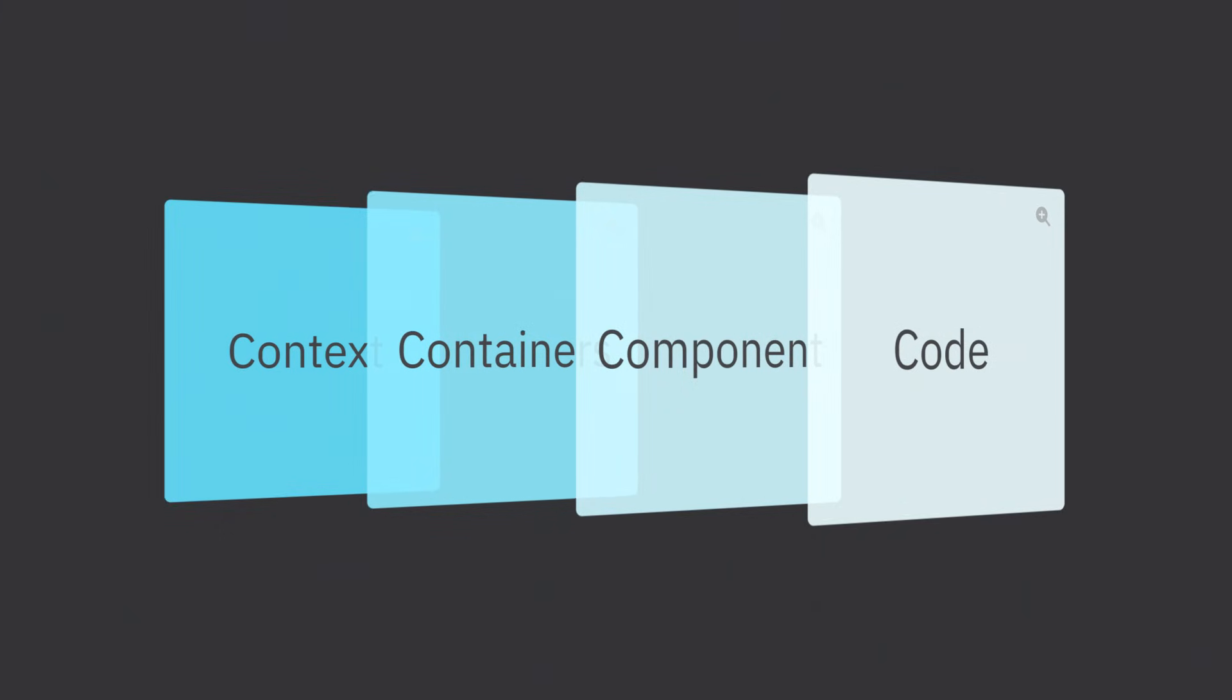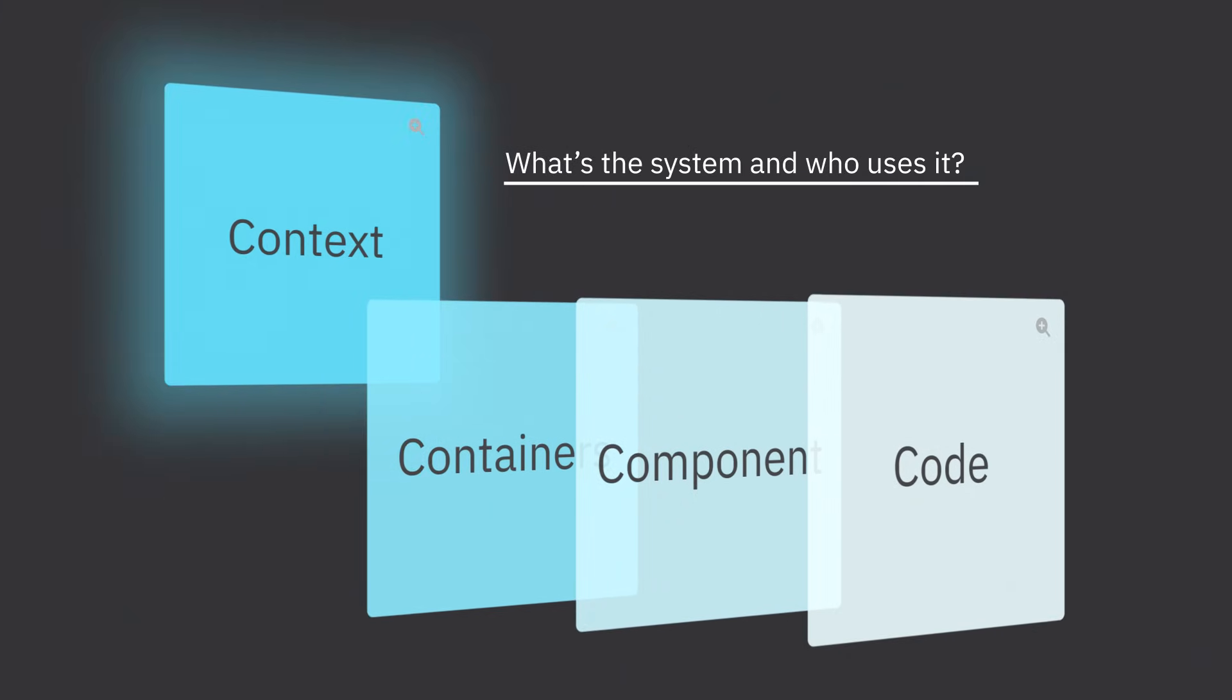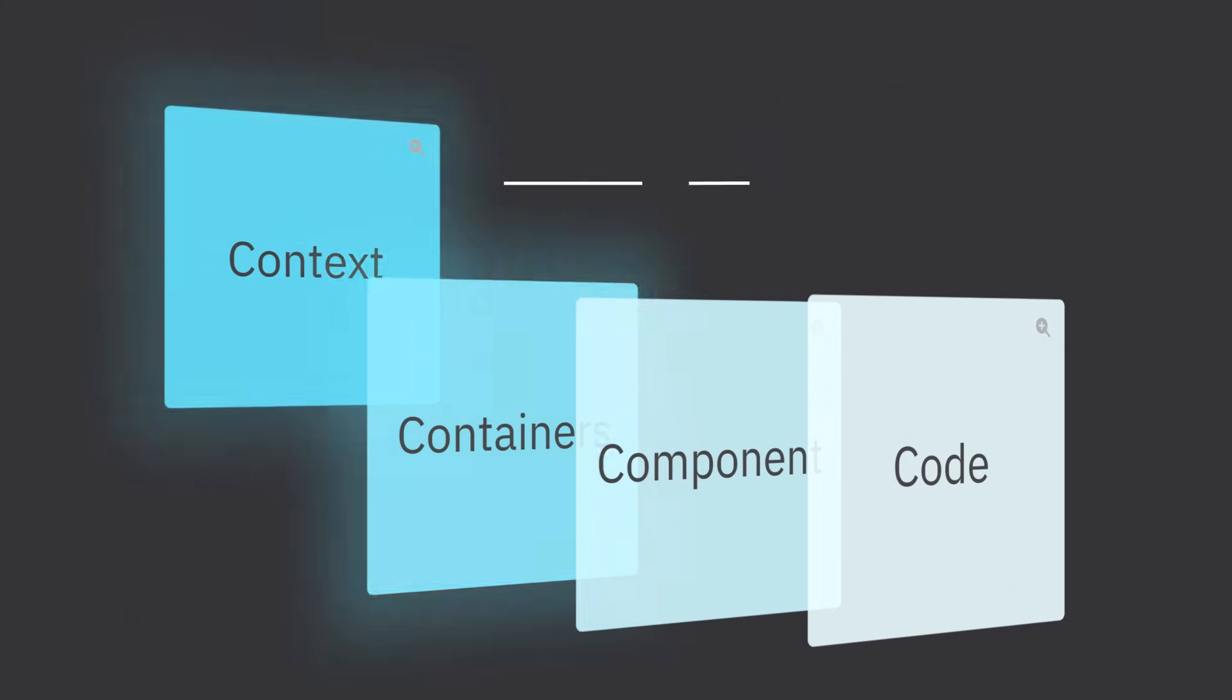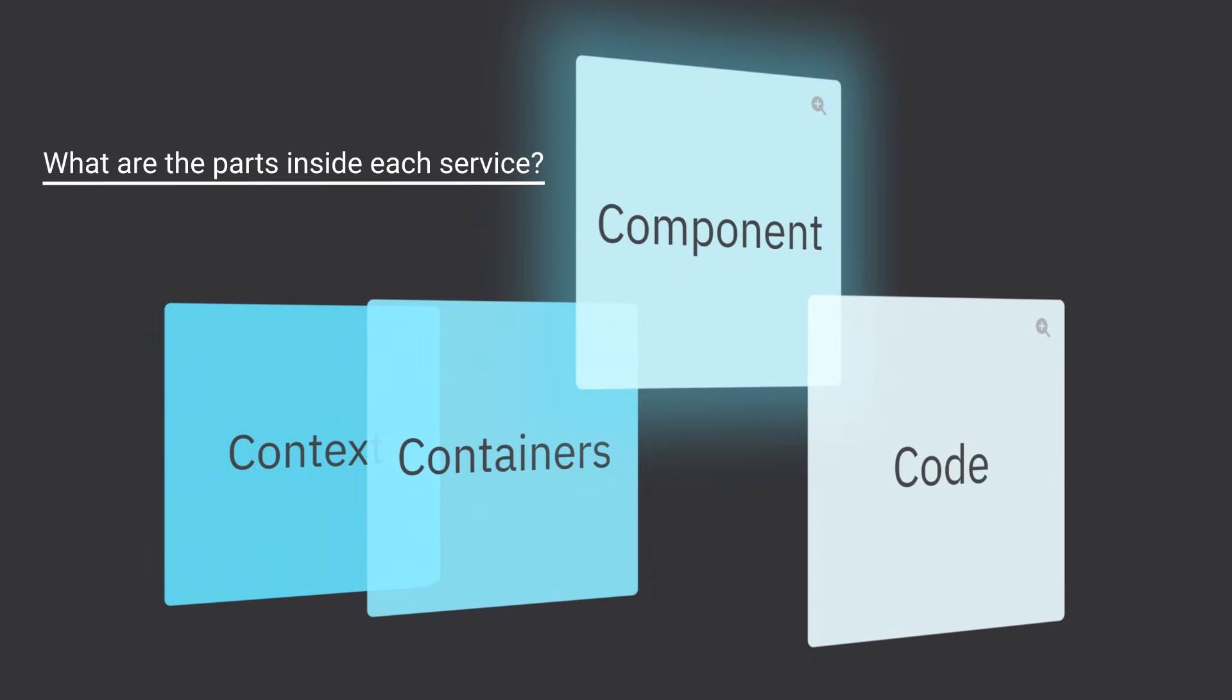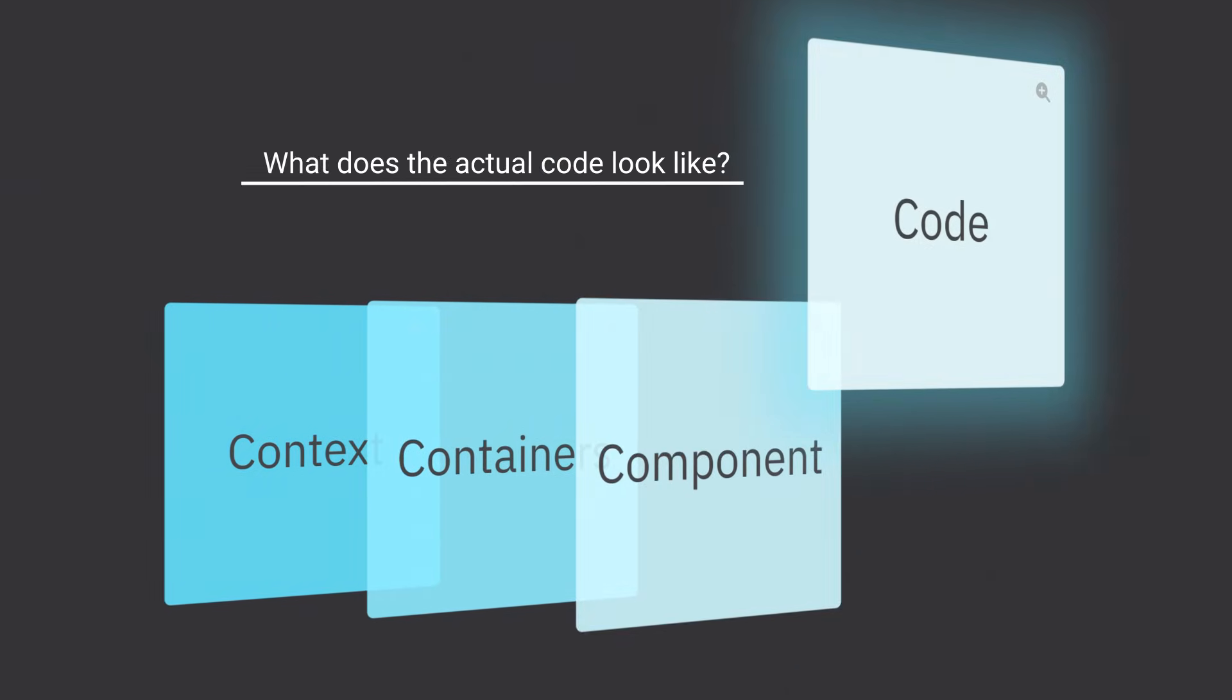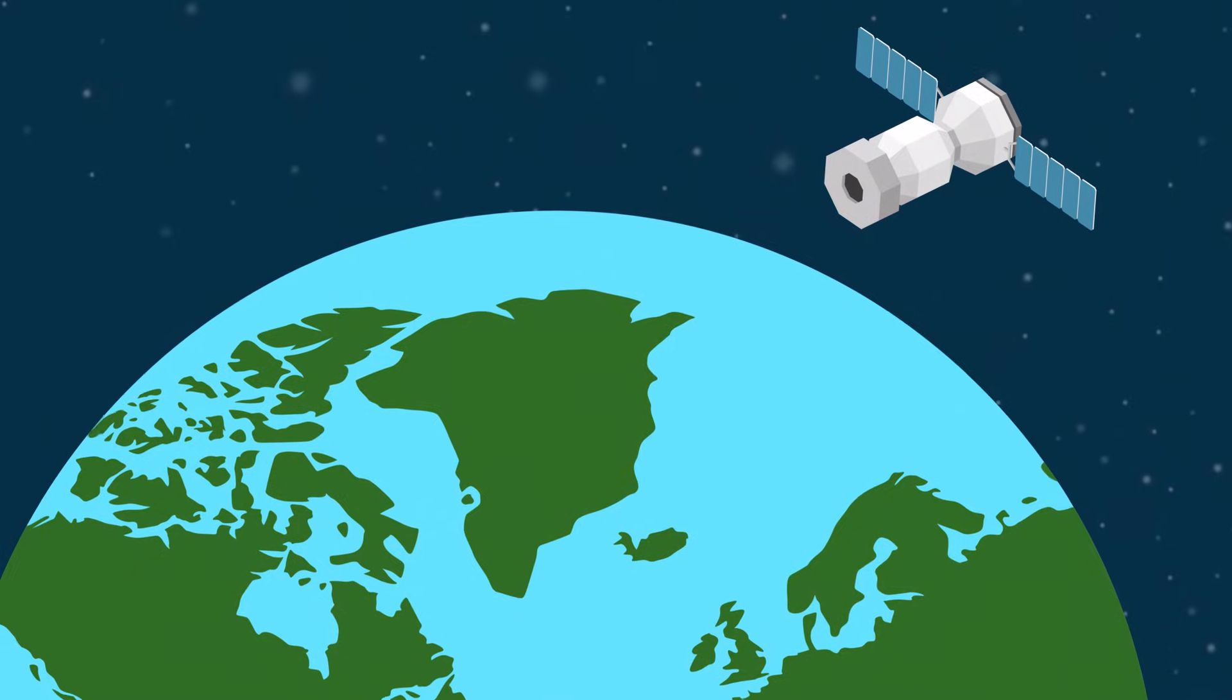The C4 model stands for the four Cs: Context - what's the system and who uses it? Containers - what apps or services run it? Components - what are the parts inside each service? Code - what does the actual code look like? This lets you zoom in from a satellite view all the way up there, right down to the snowflakes.